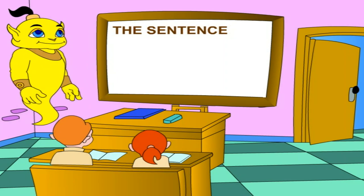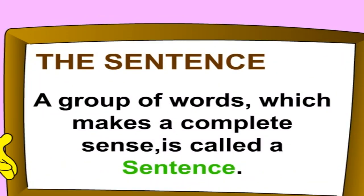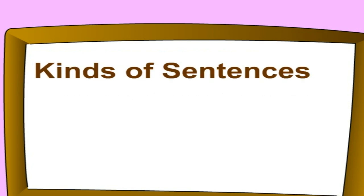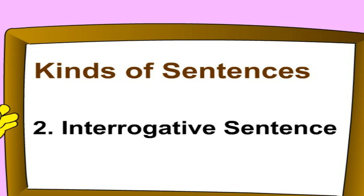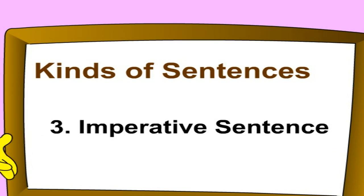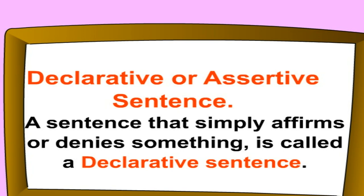A group of words which makes complete sense is called a sentence. Kinds of sentences: one, declarative or assertive sentence. A sentence that simply affirms or denies something is called a declarative sentence.